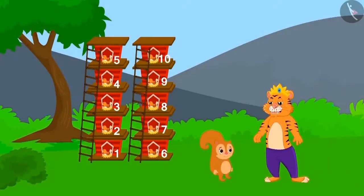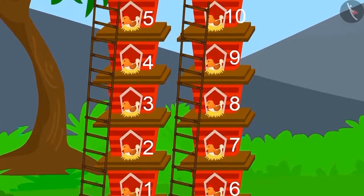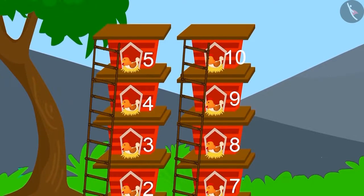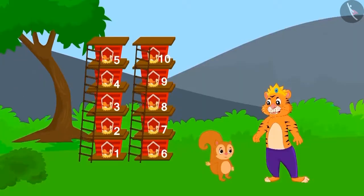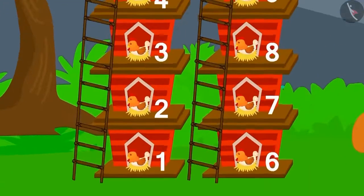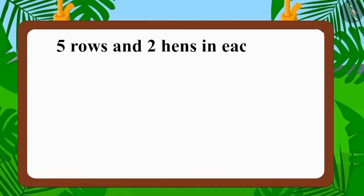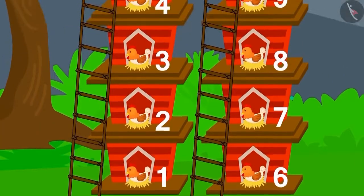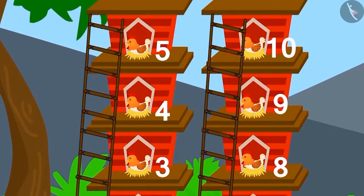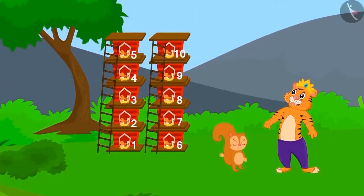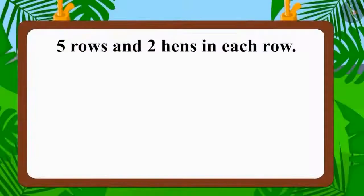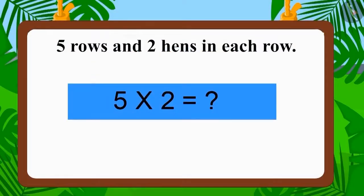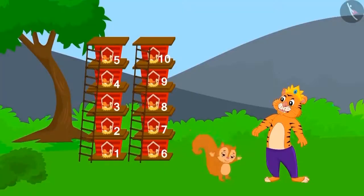Now the king arrived to see the house built by Chanda. Chanda had made use of five rows, with two hens in each row. Was Chanda's house correct? Five rows and two hens in each row — the number of hens in each row is equal. Five multiplied by two makes ten. Chanda has also built the house perfectly, and the king gave ten gold coins to Chanda too.